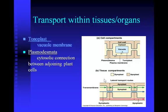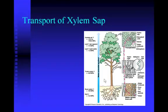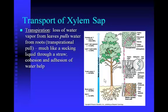Let's talk about the transport of xylem sap. The most important part of this process is transpiration — the loss of water vapor from the leaves. The loss of water vapor from the leaves literally sucks water back up through the roots. The cohesion and adhesion of water molecules caused by hydrogen bonding between water molecules helps as well, but 90% of the force that causes water to move through the plant is caused by transpiration.